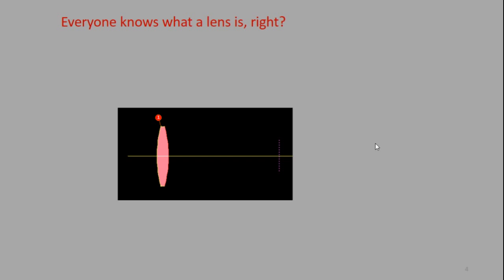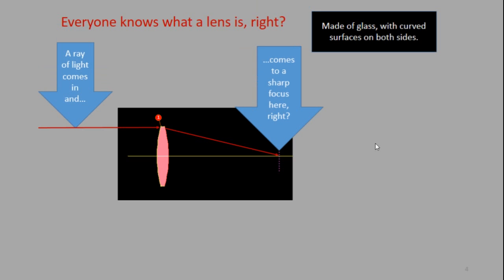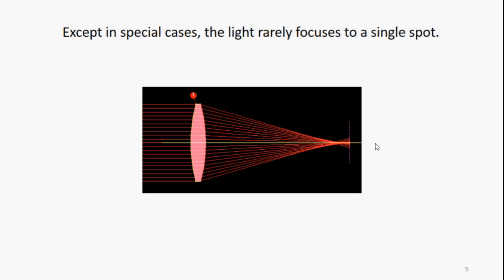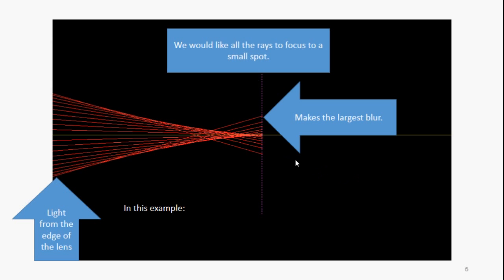Now everyone knows what a lens is, right? Made of glass with curved surfaces on both sides and a ray of light comes in and it comes to sharp focus, right? Wrong! Except in special cases the light rarely focuses to a single spot. Let's blow this up. Look at the image. We would like all the rays to focus to a small spot. In this example, the light from the edge of the lens makes the largest blur.